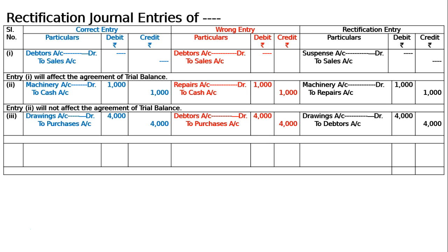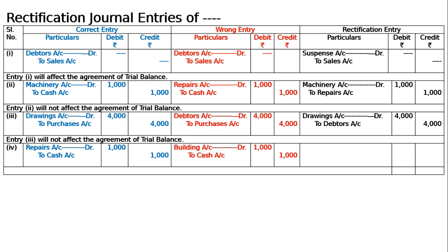The narration for this will be: goods taken by the proprietor for private use debited to debtors account, now rectified. This is also a compensating error — it has compensated in the debit. Hence entry 3 will not affect the agreement of the trial balance. The first one will only affect. The fourth one is: 1000 paid for repairs to building have been debited to buildings account. The correct entry is repairs account debited to cash account, 1000. The wrong entry is building account debited to cash account, 1000.